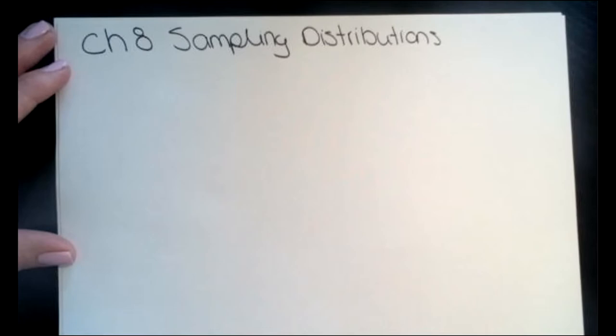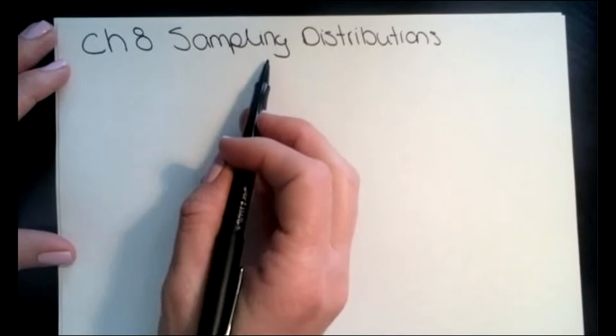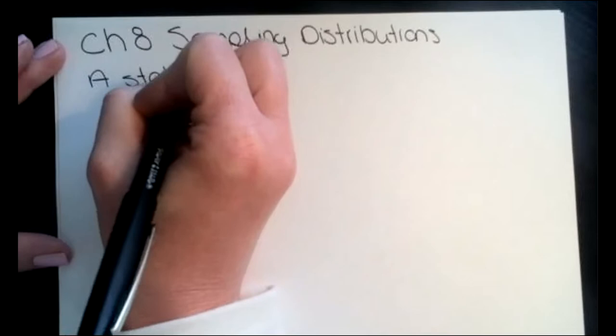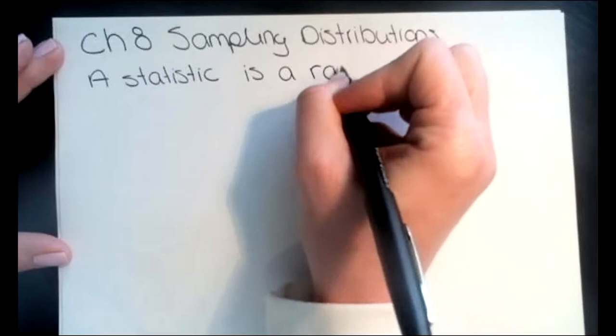So that's what we're going to do today. Let's get a couple definitions down and understand what the sampling distribution is and what it's about, and then we can take a look at an example. I want you to know that a statistic is a random variable.